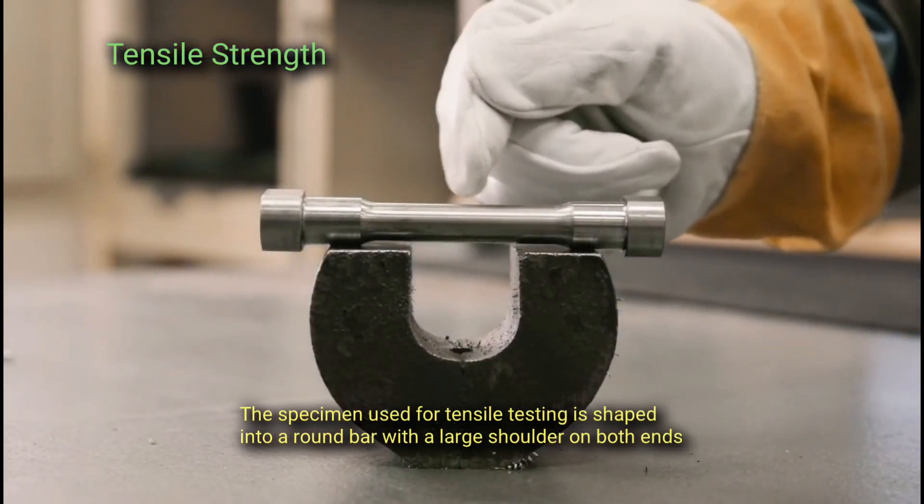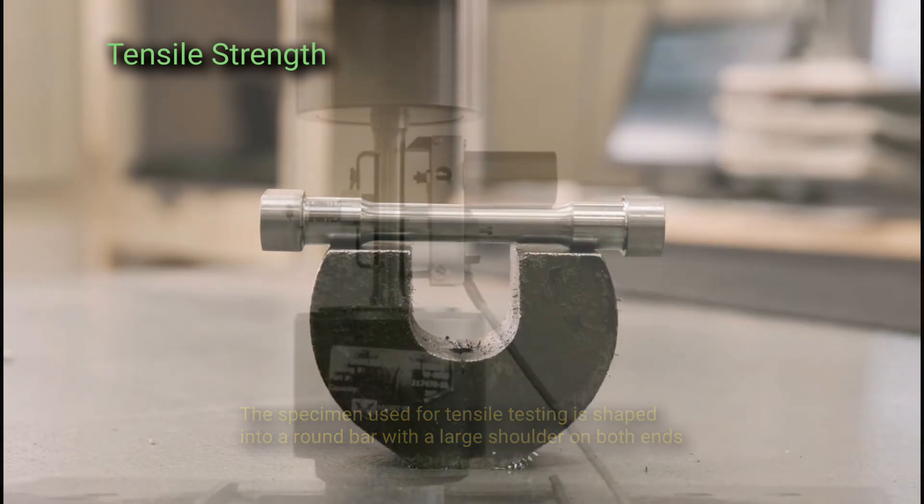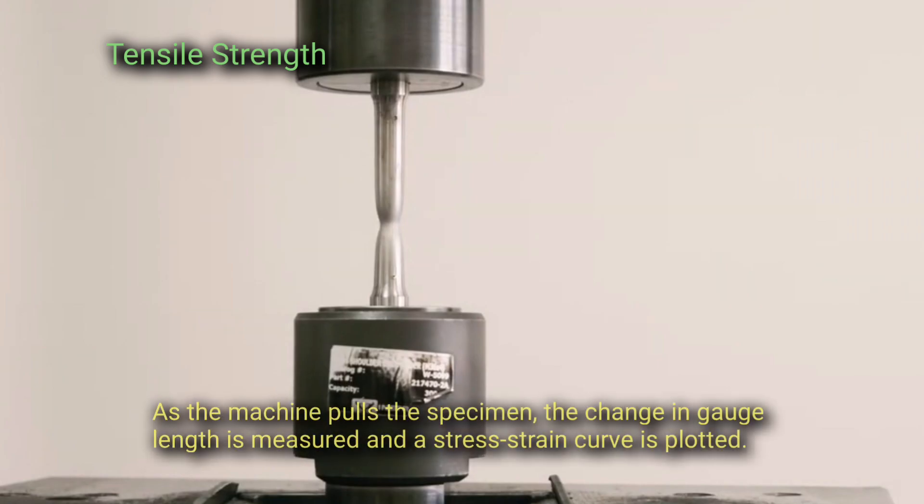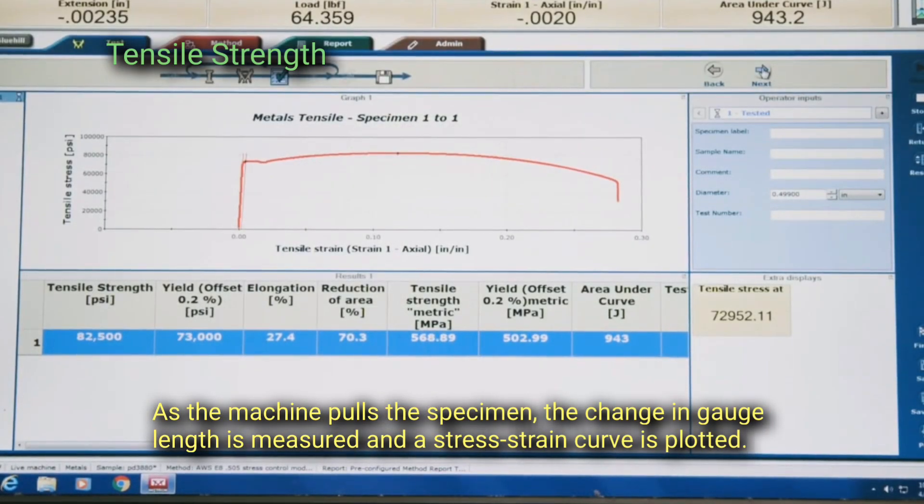The specimen used for tensile testing is shaped into a round bar with a large shoulder on both ends, from which the testing machine can hold the specimen during the application of the stress. As the machine pulls the specimen, the change in gauge length is measured and a stress-strain curve is plotted.